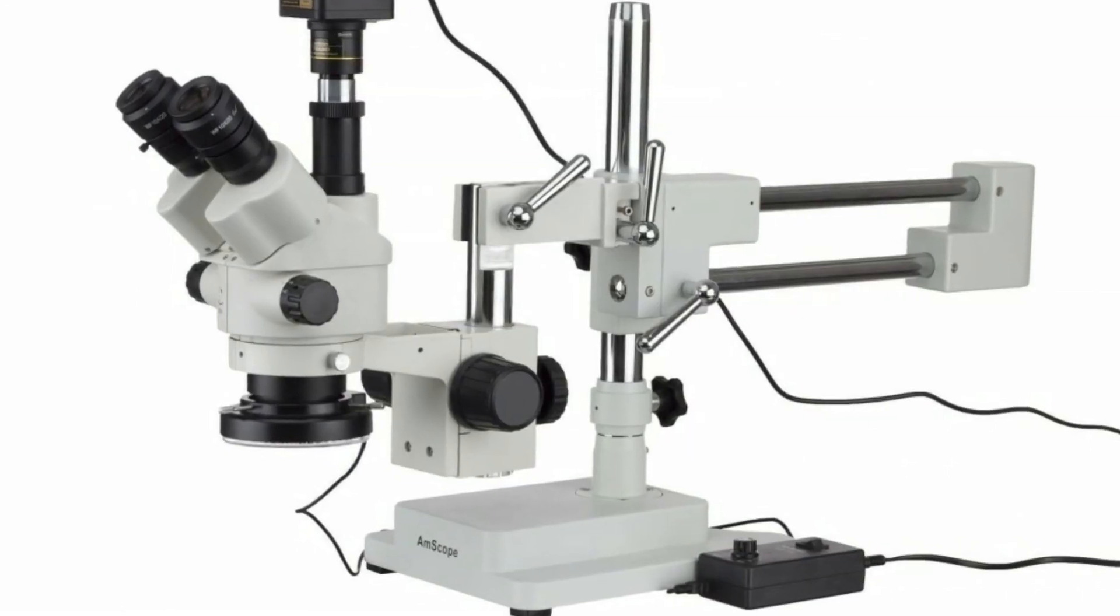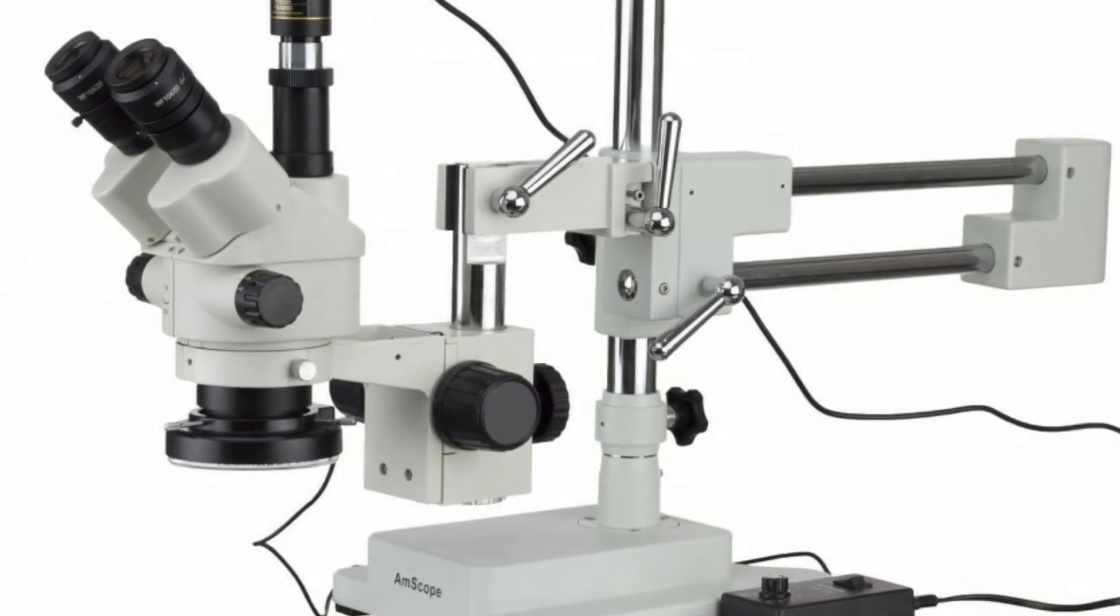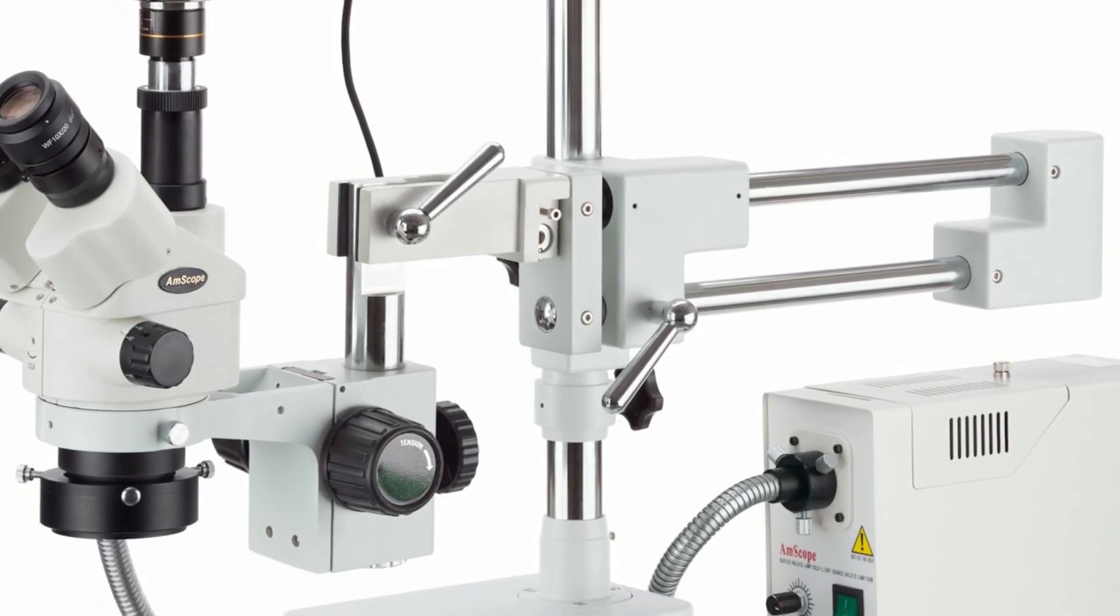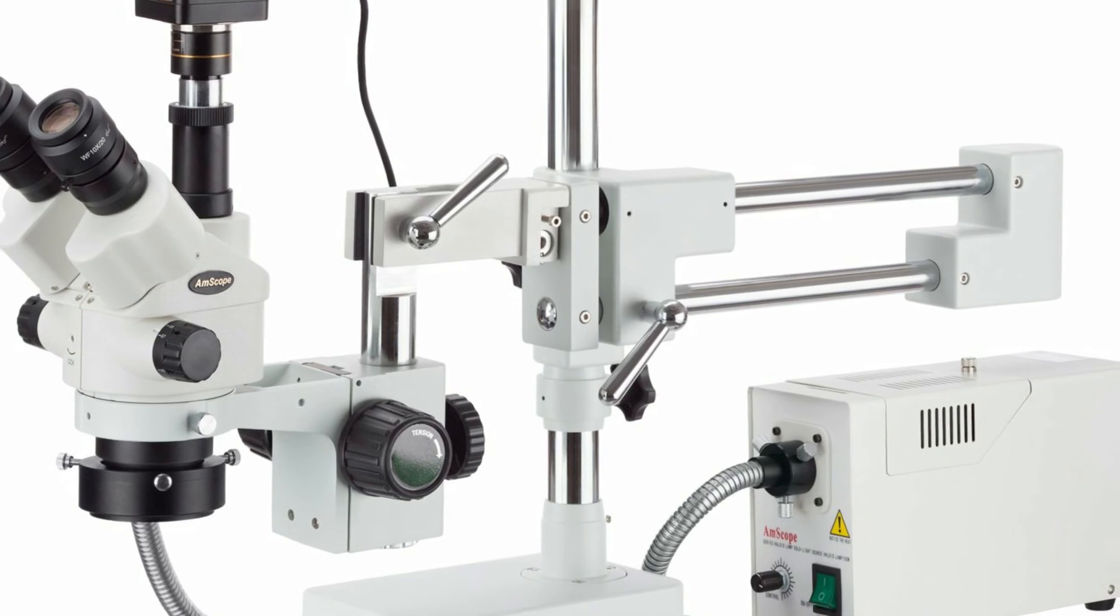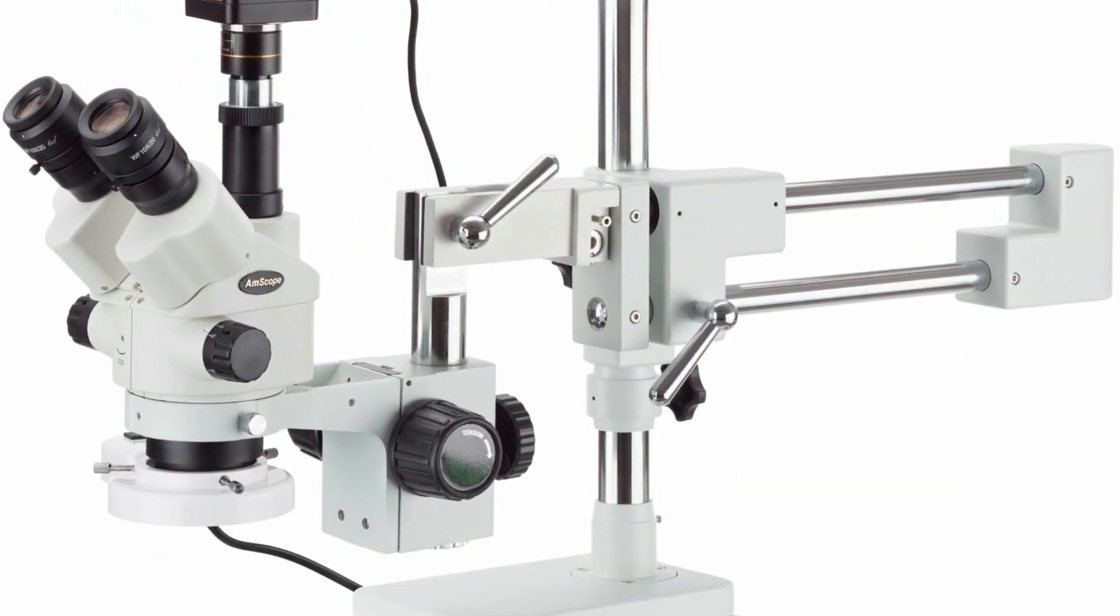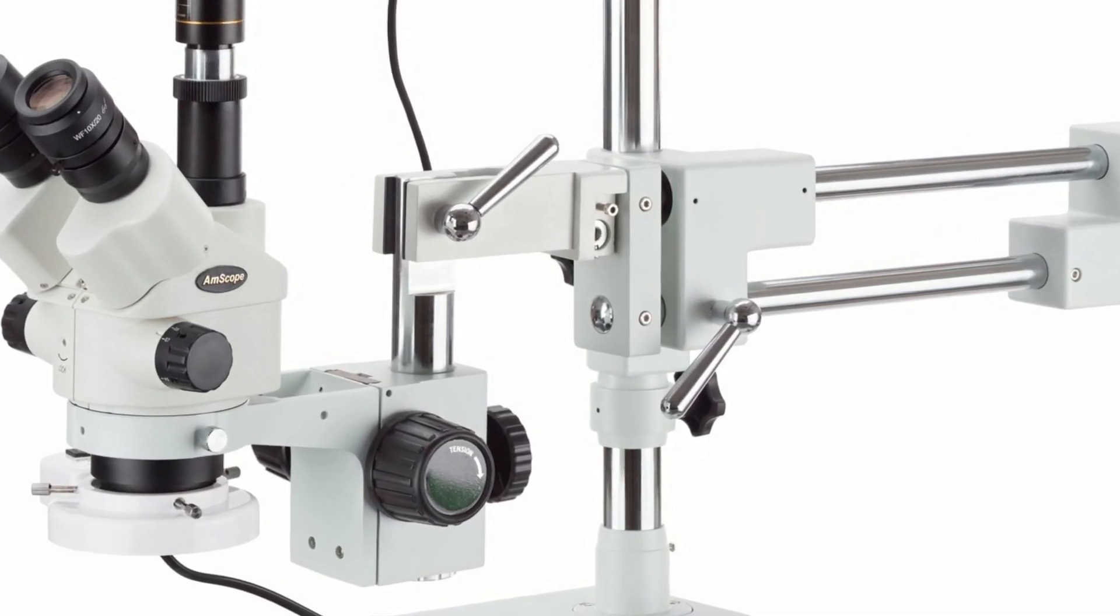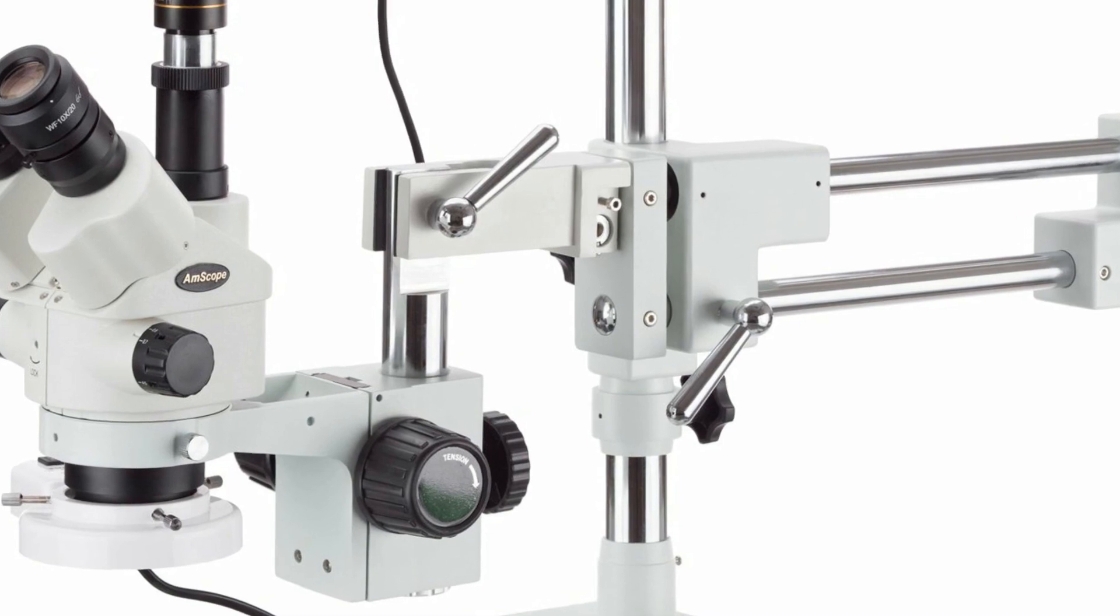The multi-pivoting double-arm boom stand provides a stable, flexible support system ideal for hands-on work. A drop-down column allows the head to be positioned at virtually any angle. Ball bearings provide smooth movement of the lateral arms, which can easily pivot the microscope out of the way when not needed. The heavy steel base ensures stability even when laden with attachments.